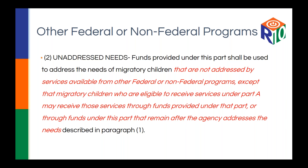The last part of that statute says: through funds under this part that remain after the agency addresses the needs. In short, if there's funding left over after you've addressed the primary needs required by statute, you can use that remaining Title I Part C funding in addition. So: part one says use this funding for needs not met through other programs; part two says don't forget about your Title I Part A; and part three says any leftover funding can be used for additional needs. Think of Title I Part C as above and beyond, with the bare minimum needs addressed first.